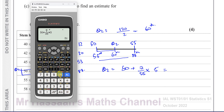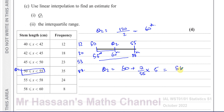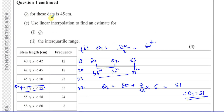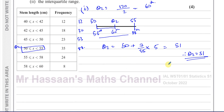That gives us 51 exactly. So Q2 is 51. For part 2 we need the interquartile range, which requires Q3, since IQR = Q3 − Q1.